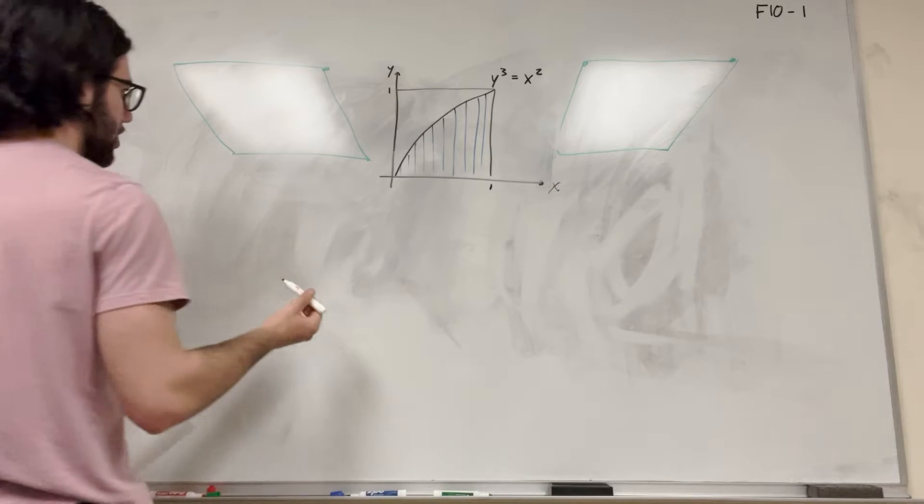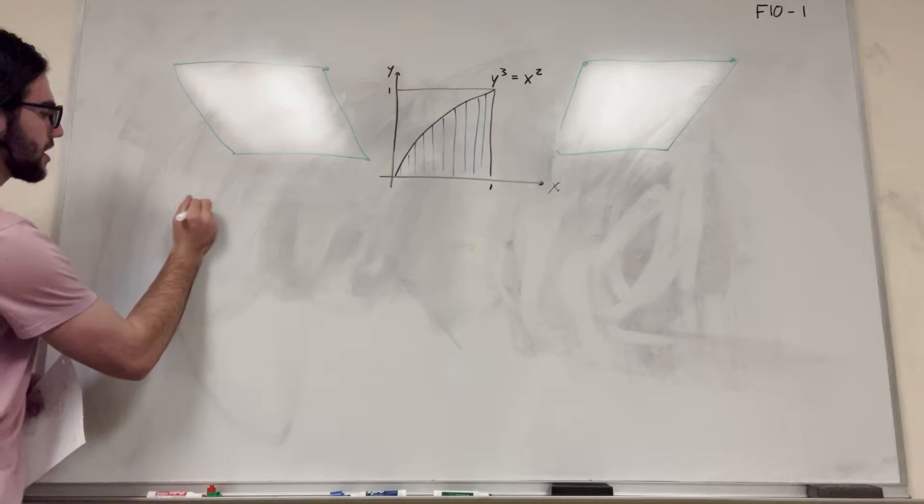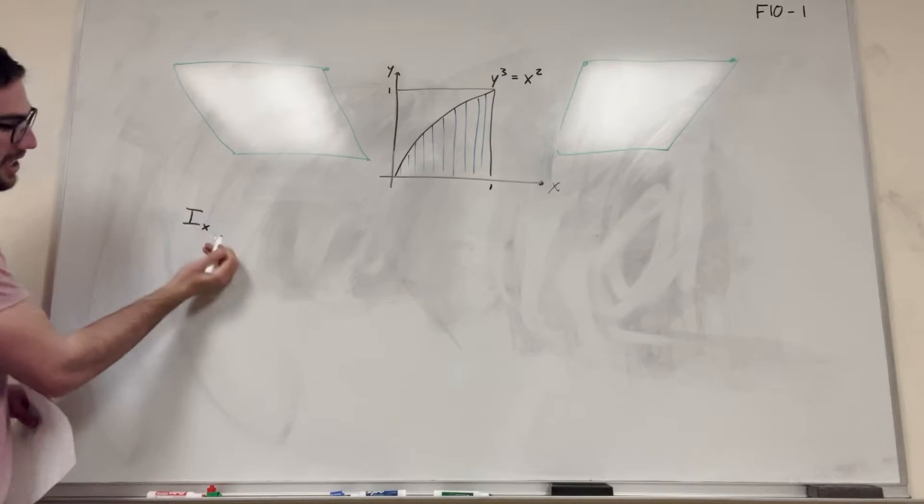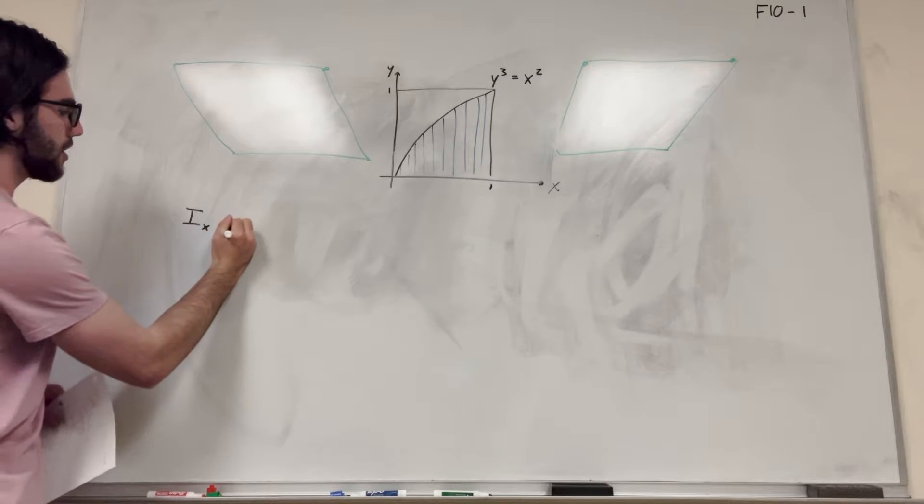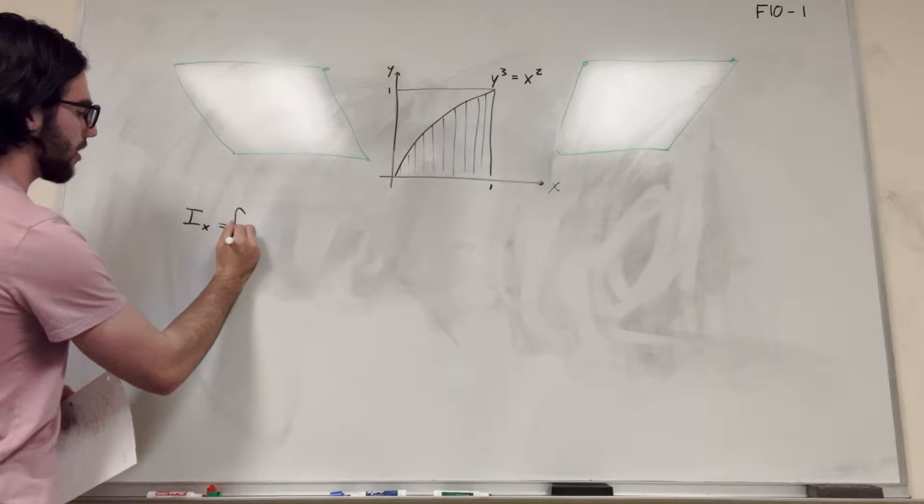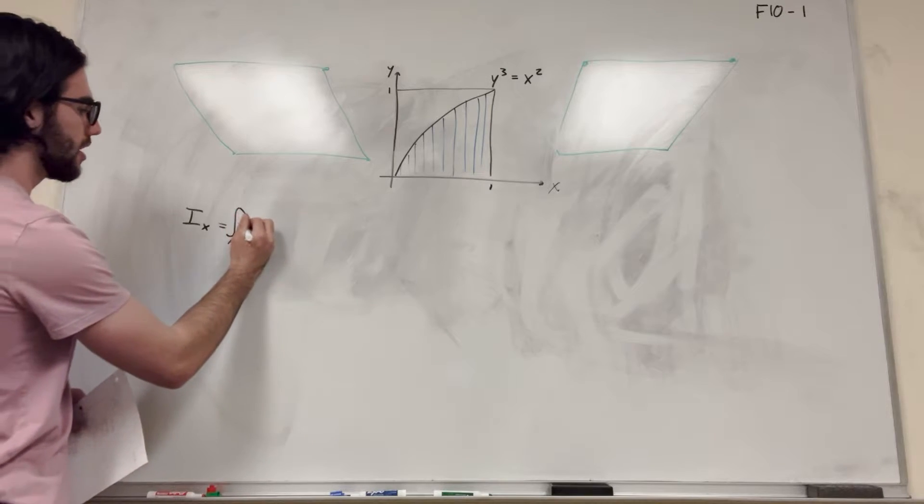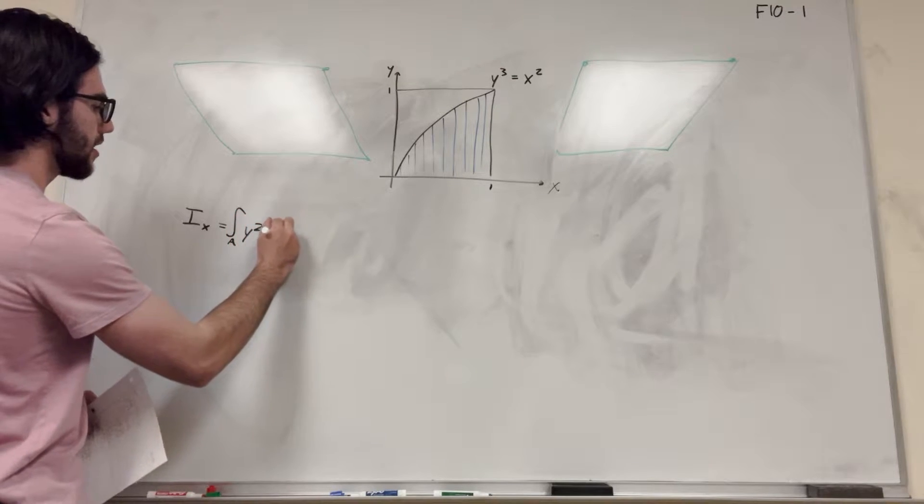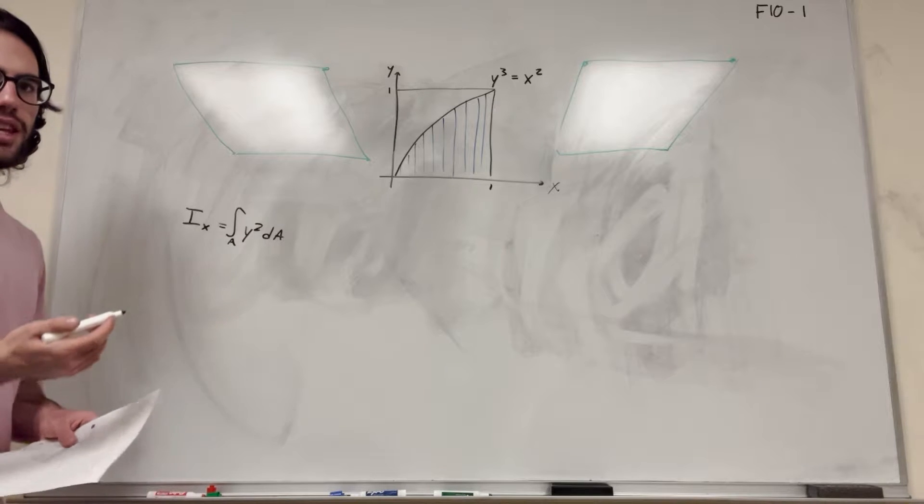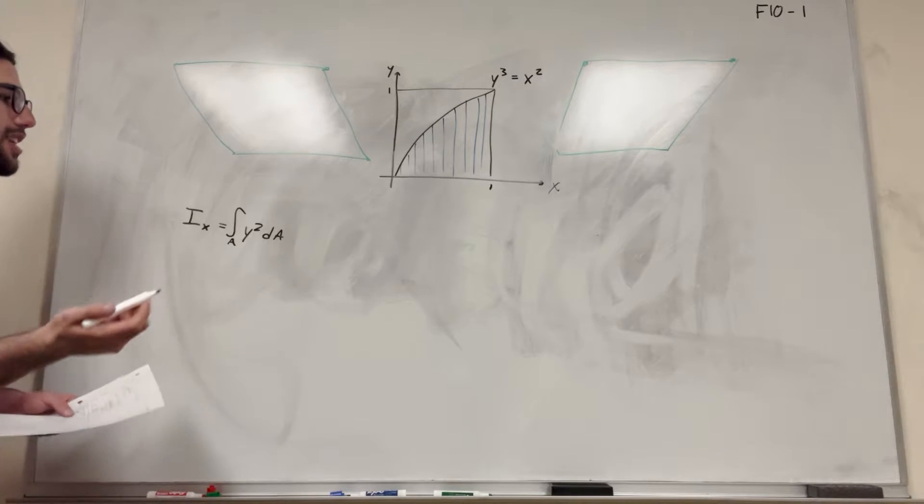So basically what we have here is an equation. An equation to solve this is the moment of inertia around the x-axis. It's equal to the integral over the area. So we're integrating over the area of the shape y squared dA. This is our integral and this is not how we're going to solve it yet. We need to continue to solve this.